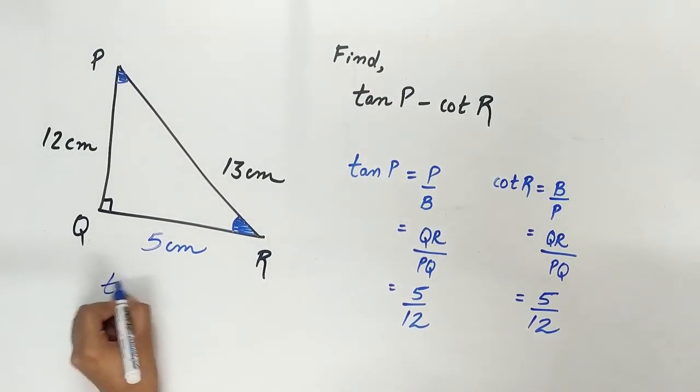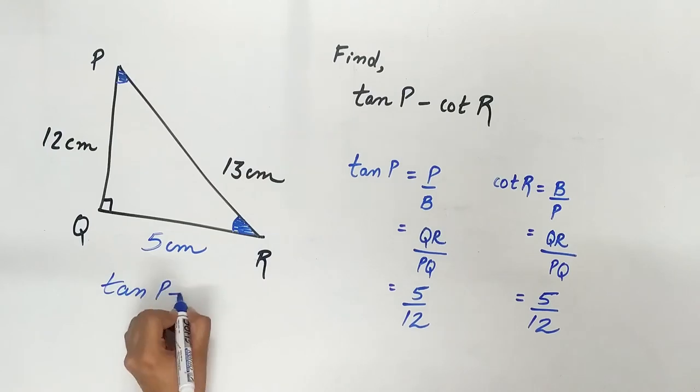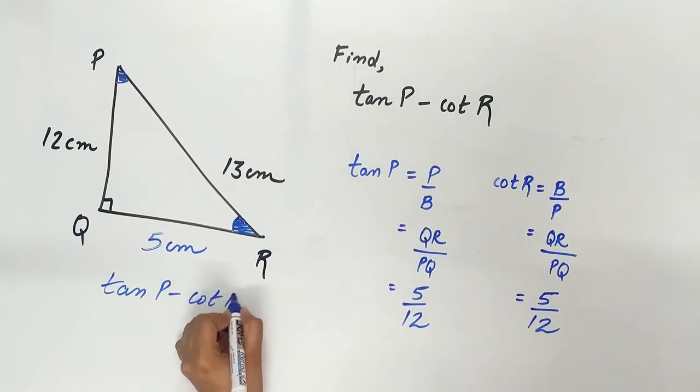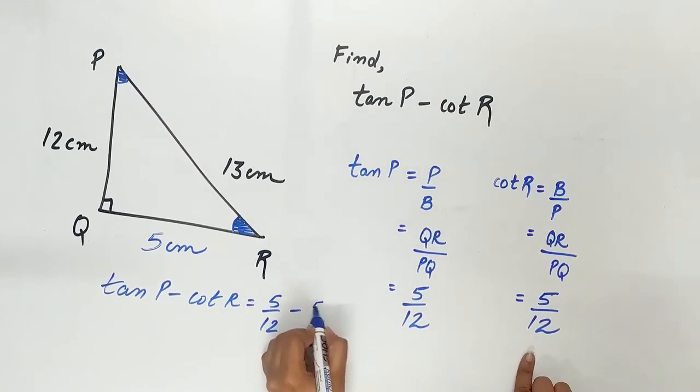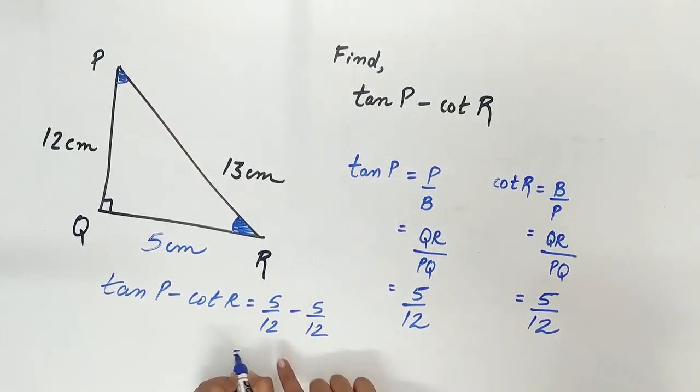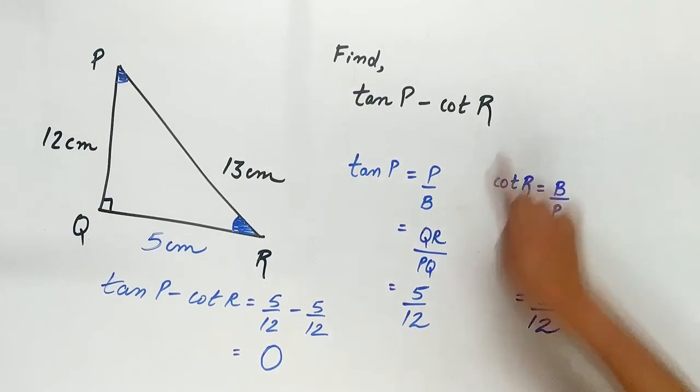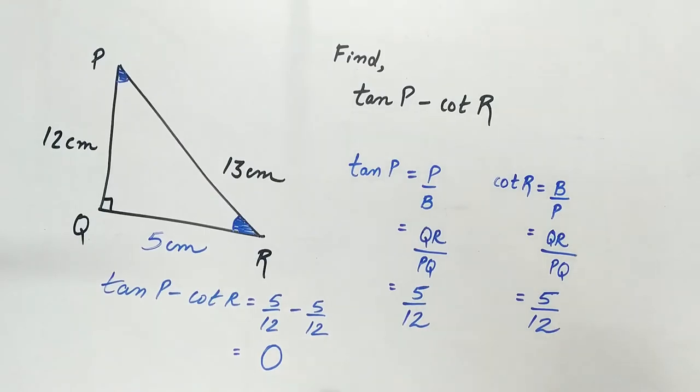We have to find tan P minus cot R. Tan P is 5 by 12, cot R is 5 by 12. And 5 by 12 minus 5 by 12 is 0. So the value of tan P minus cot R is 0. Thank you.